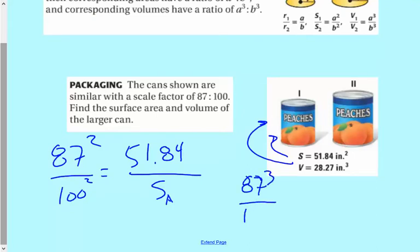And you just solve that, and then you just do the same thing, only you do 87 cubed over 100 cubed equals 28.27 over volume. I suppose I should maybe solve one of these. I'm just going to grab my calculator here.